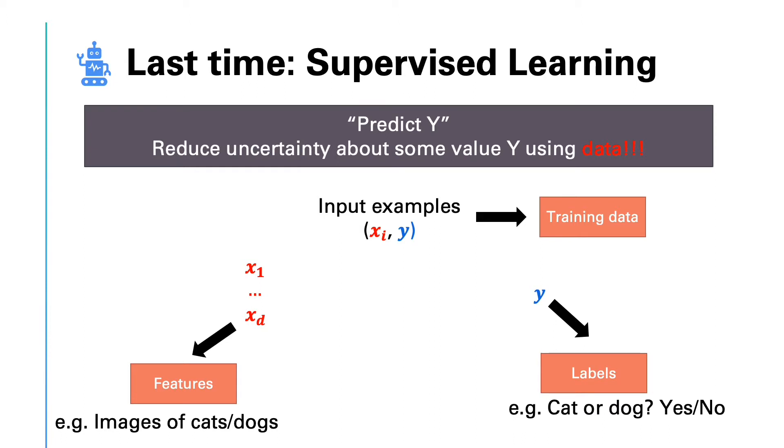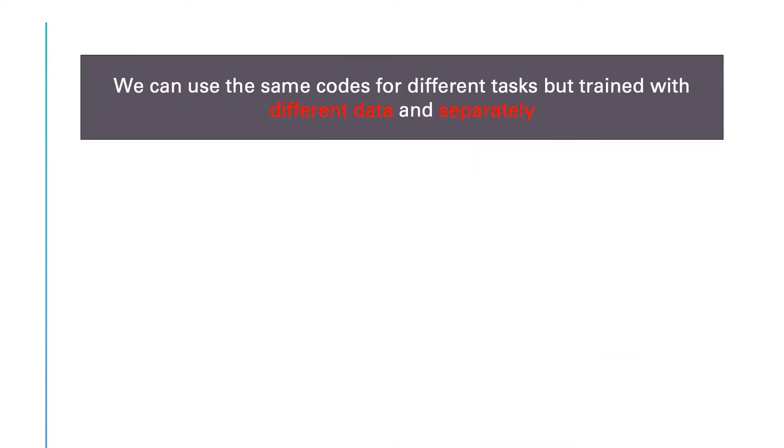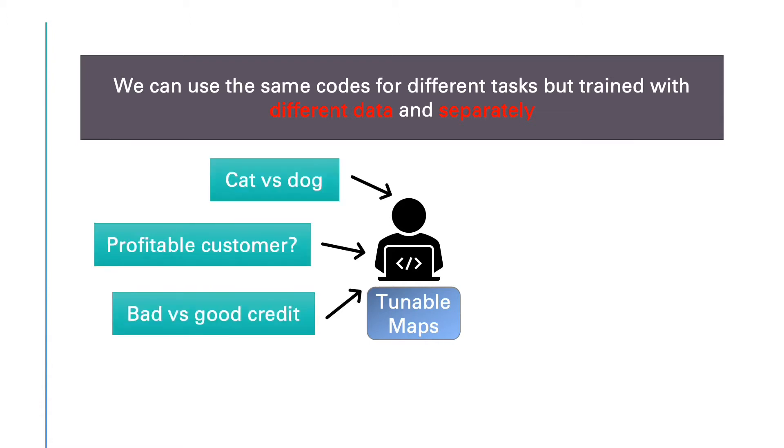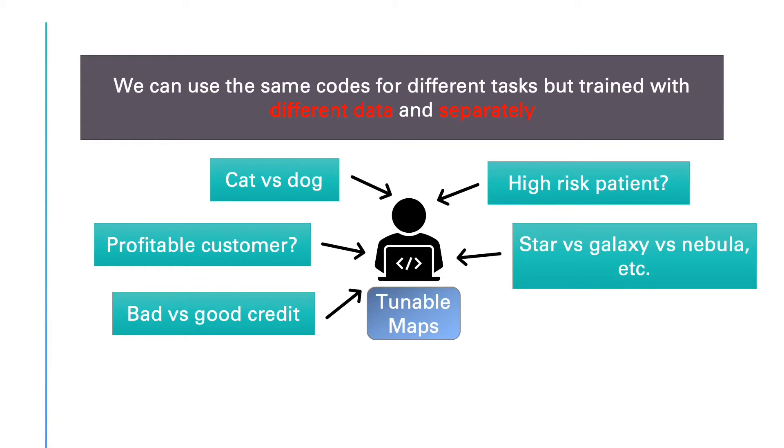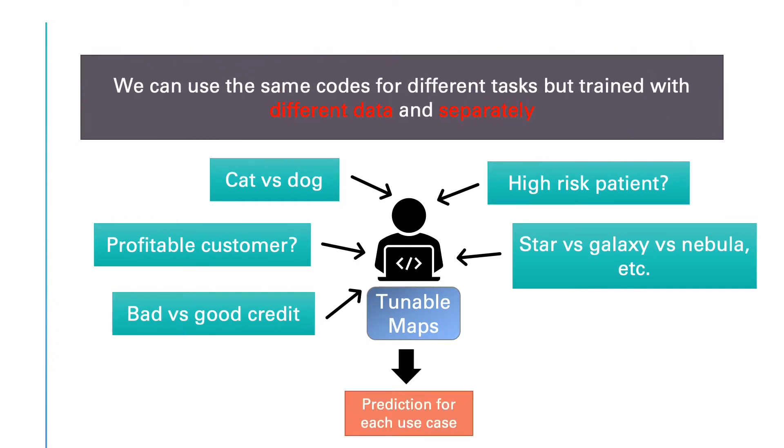We discussed that in supervised learning, we use standard functions or mappings that are tunable, and the training data is used to tune this function so that it estimates or predicts the label correctly. One important aspect of supervised learning is that because we are taking advantage of a standard function, we can reuse the same code for different problems. We only need to train it separately for each use case using the appropriate training data. This is one of the reasons why we can use supervised machine learning techniques efficiently.